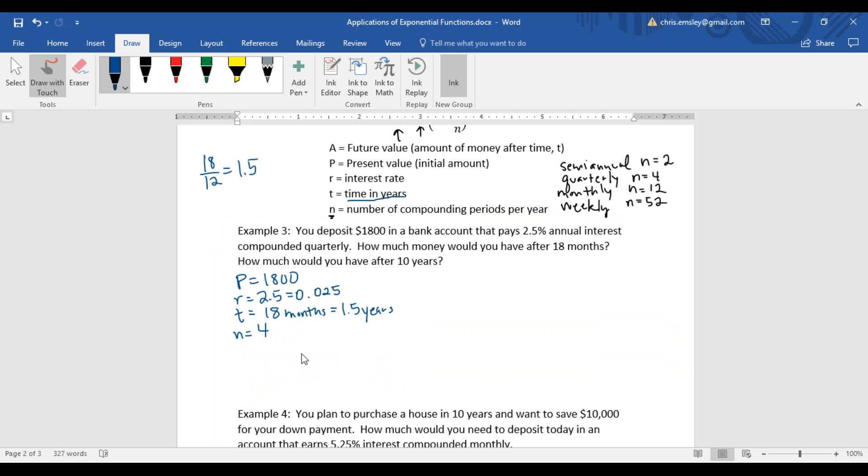Then we can fill in the blanks. The amount of money we'll end up with, our future value is our principal times 1 plus our interest rate divided by the number of compounding periods, the number of times it's compounded per year. And then our exponent is n times t, so that's 4 times 1.5. This is calculator work once you have your formula all filled in.